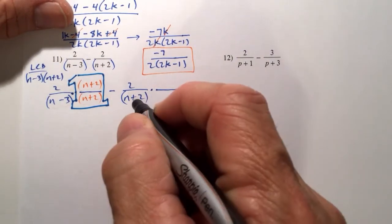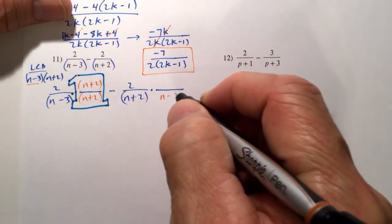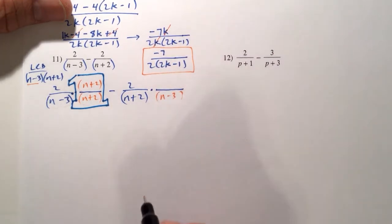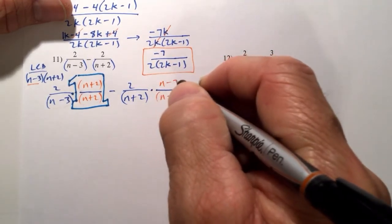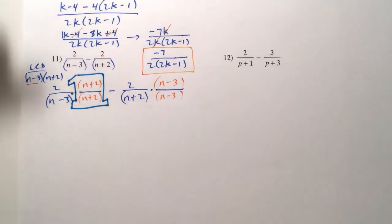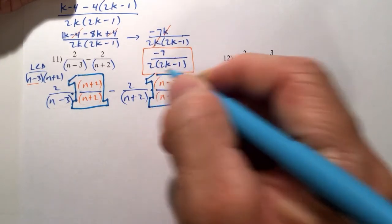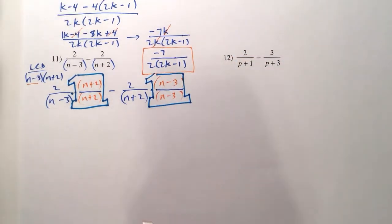This denominator over here, n plus 2, is missing the denominator of n minus 3, the factor of n minus 3. So we multiply top and bottom by n minus 3. And which means we're multiplying the second fraction by 1 as well.